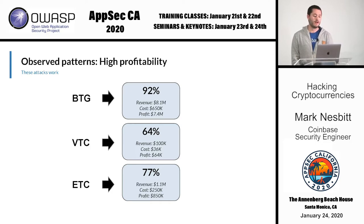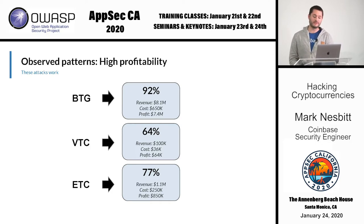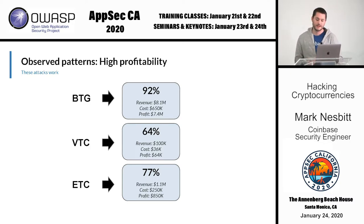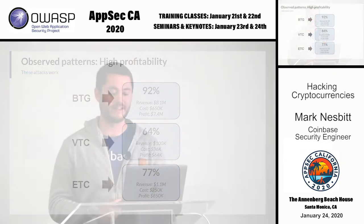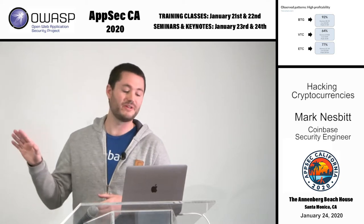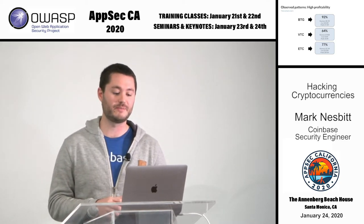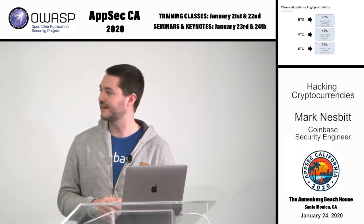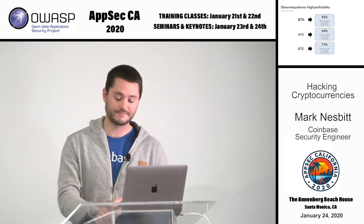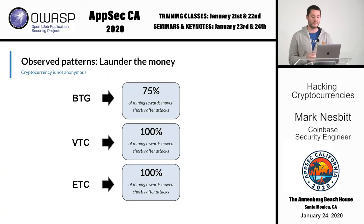High profitability: these are just the returns from the double spends alone of each of the three attacks. When attackers create a reorg, they're mining blocks, which means there's also a mining reward they could sell — these figures don't even include that. This is simply the cost to mine versus the amount that was double spent — very effective, with a lot of margin for error. The mining reward and leftover coins are valuable and do typically get sold, sent almost immediately after the attacks.